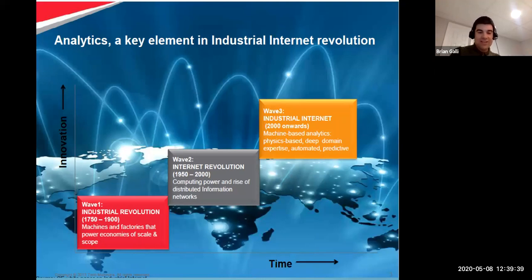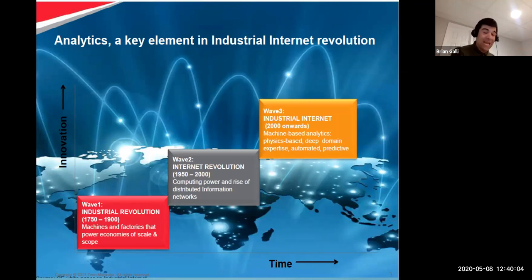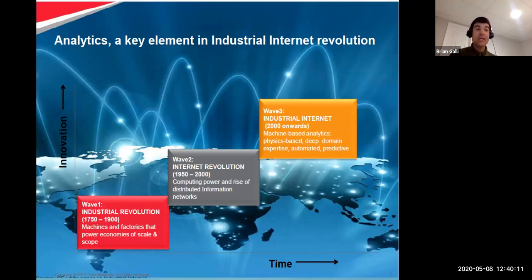In the 1750s to 1900s, the Industrial Revolution is when we powered up factories and manufacturing was really king. In wave two, the Internet Revolution — the dot-com era — really ended around 2000, when computers became more and more prevalent. Now we're in this digital revolution where we do analytics not just by hand or spreadsheets, but using physics-based, machine-based expertise and predictive analytics to help us make real-time decisions very, very fast.